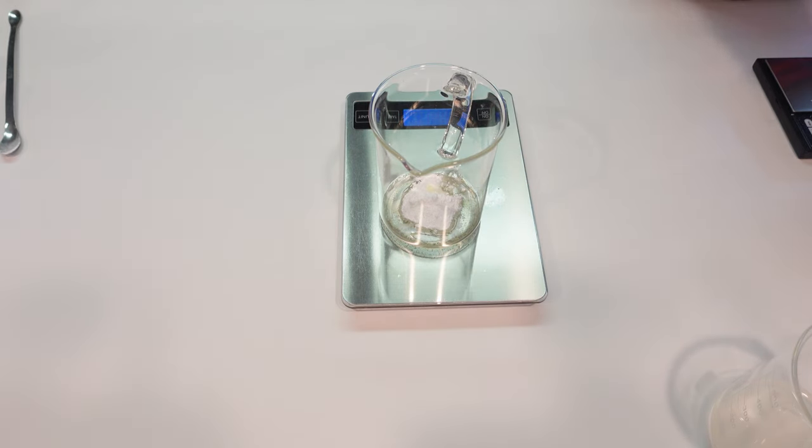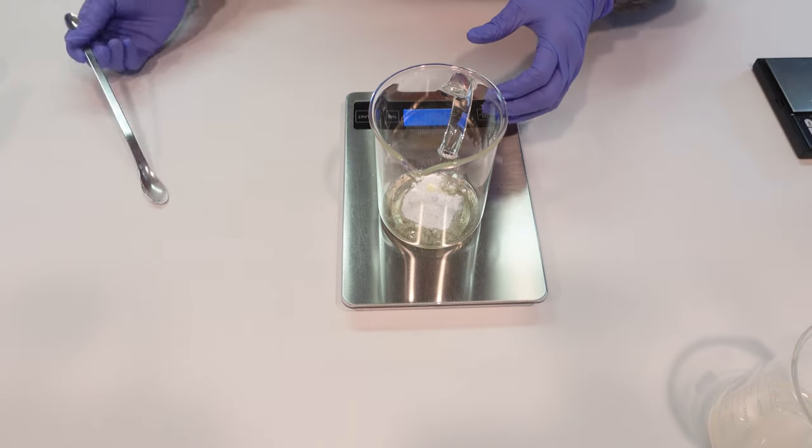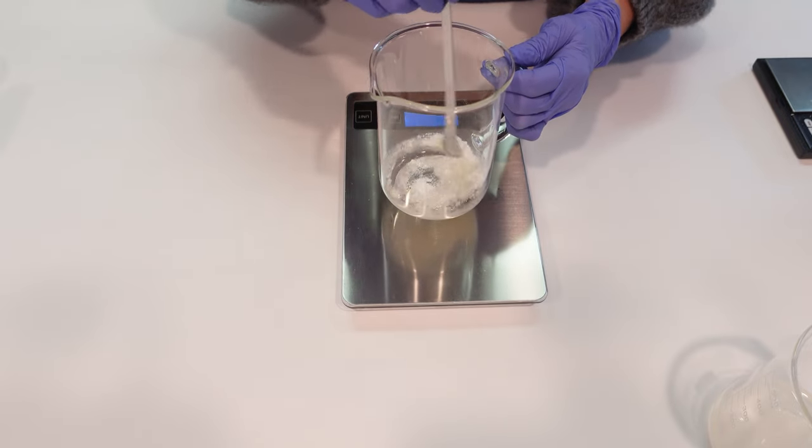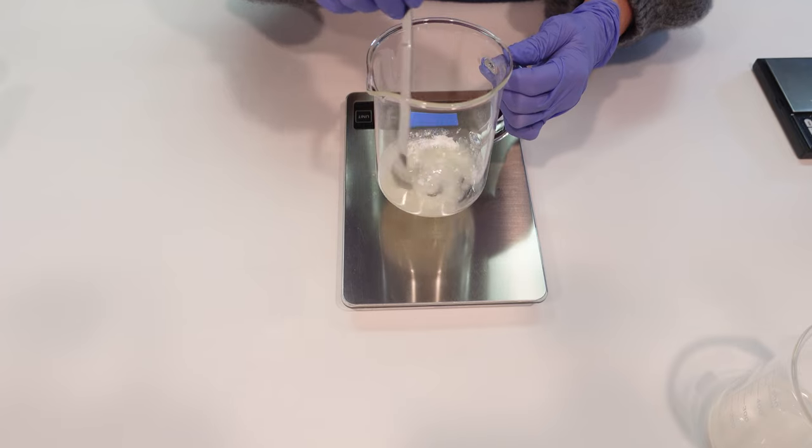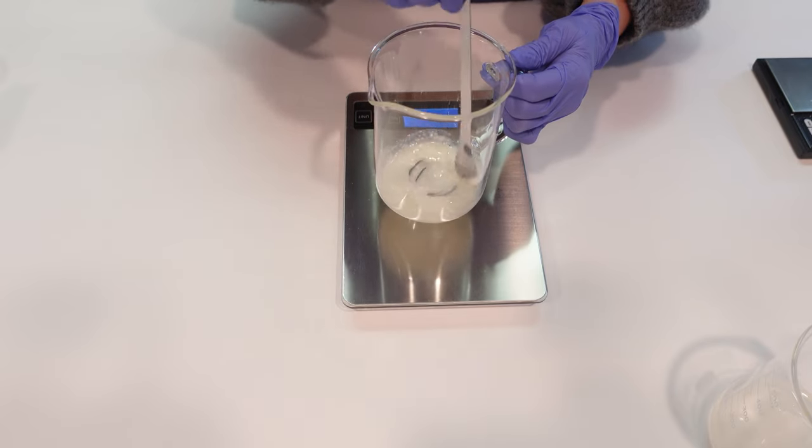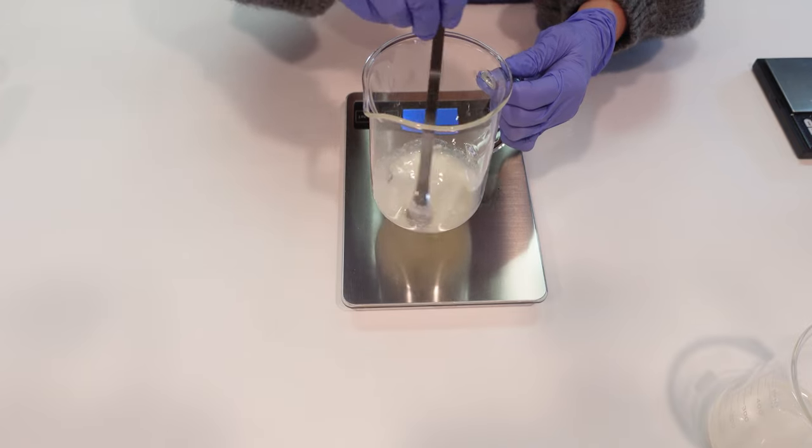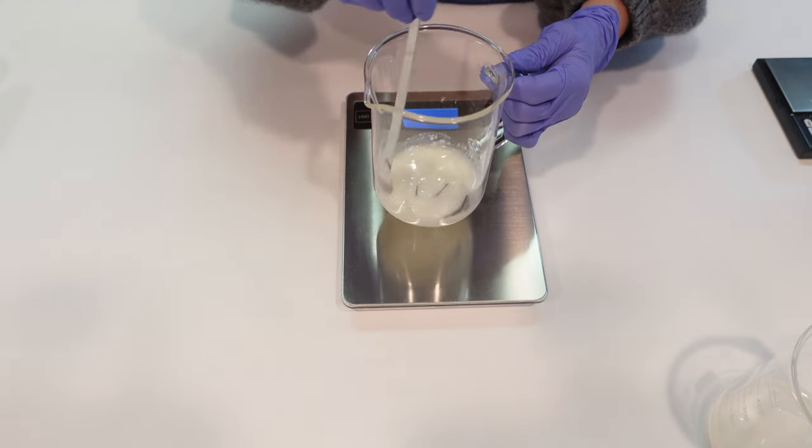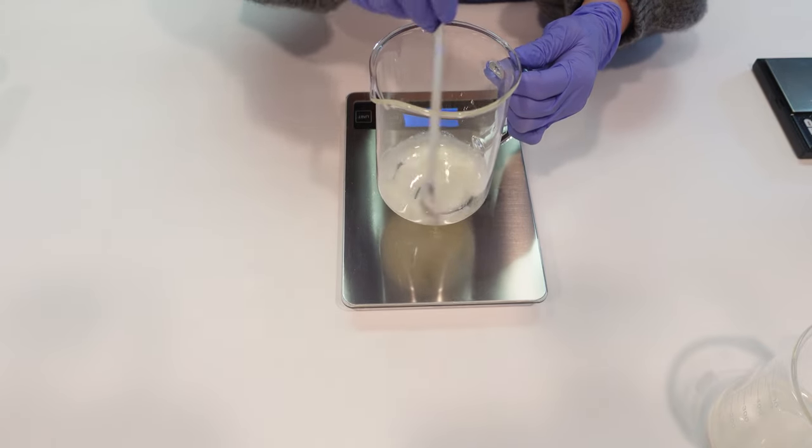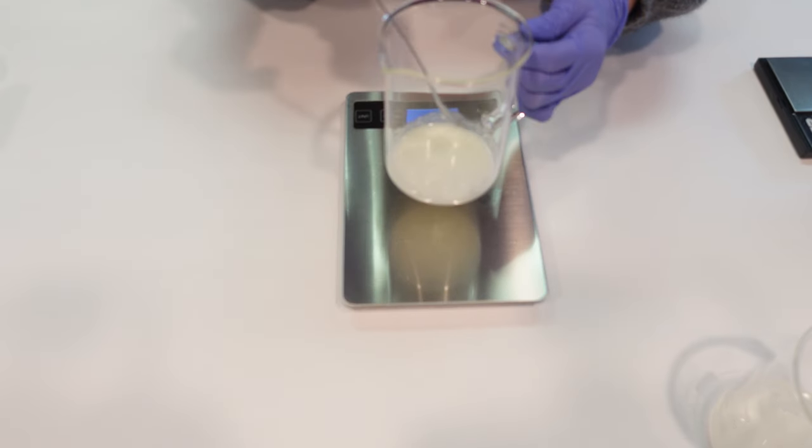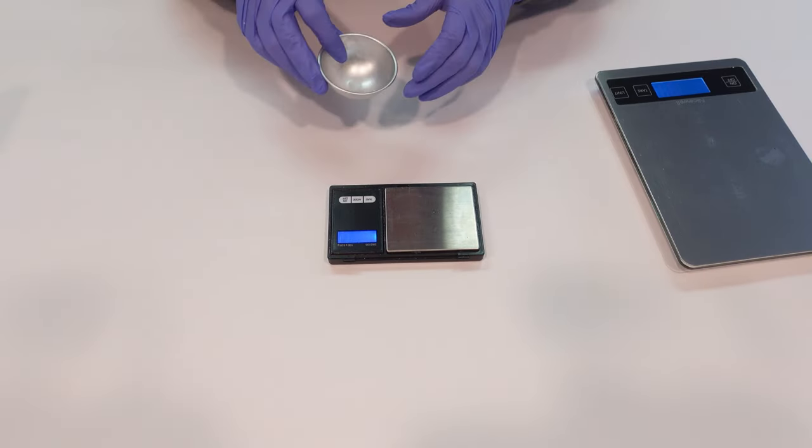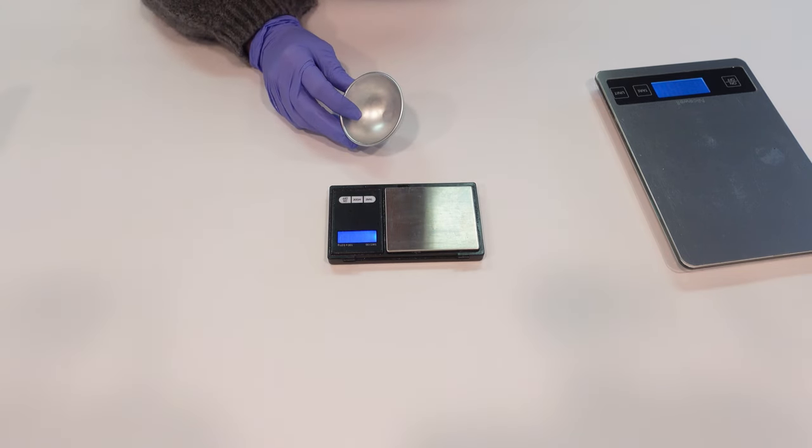Then we're going to give this a bit of a stir to combine. We just want to combine that Sepimax Zen with the oil to start working out any powdery clumps. It's just going to look sort of opaque. Next we're going to heat up our oil and water phase.